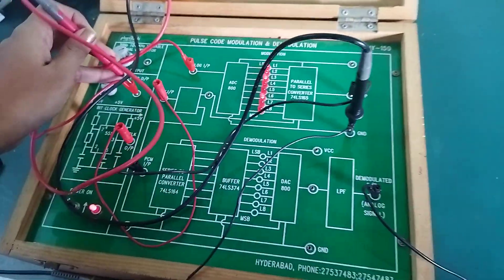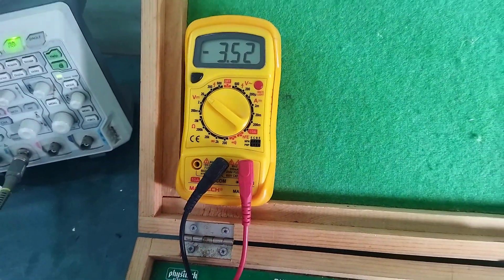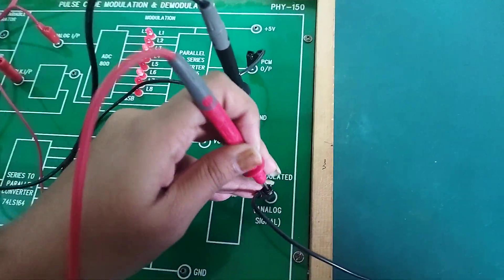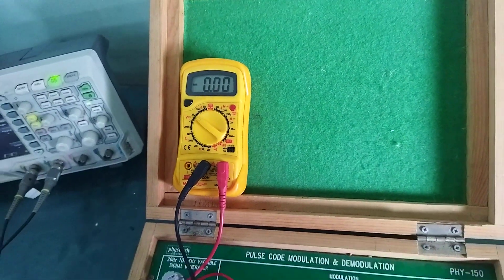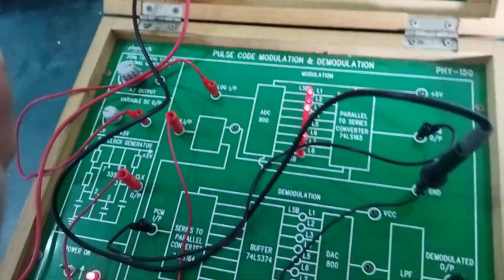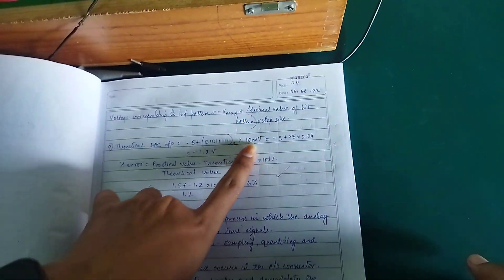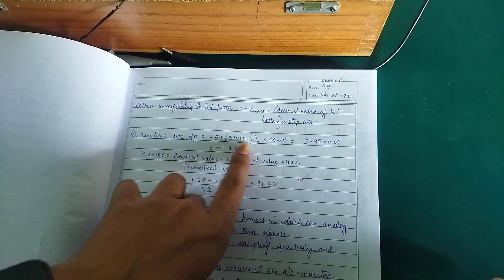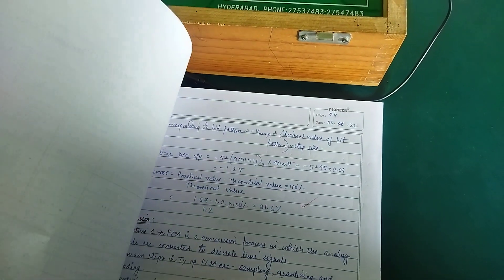The input is minus 3.52 and output is minus 3.62. The bit pattern is 11100100, equivalent to the decimal value. We convert it and multiply by the 40 millivolt step size, then add it to minus 5. This is the value. Here we have the error calculation.